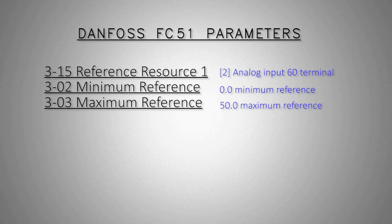There are two other parameters I want to discuss: minimum and maximum reference, parameters 3-2 and 3-3. These two parameters define the minimum speed of the motor at 4 mA and the maximum speed at 20 mA analog input signal. For this example I set 0 Hz speed at 4 mA and 50 Hz at 20 mA analog input signal.